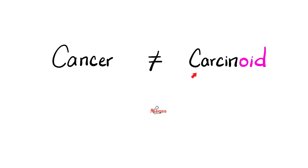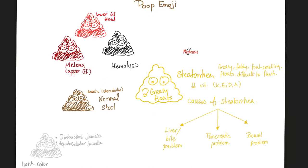Please do not confuse cancer with carcinoid — poop emojis in medicine. Here's the normal stool: brown. This is pale or clay stool. We can see this in obstructive jaundice, post-hepatic jaundice, and in some cases of hepatocellular jaundice as well. This stool is greasy and oily and floats on the water surface in the toilet bowl. This is steatorrhea.